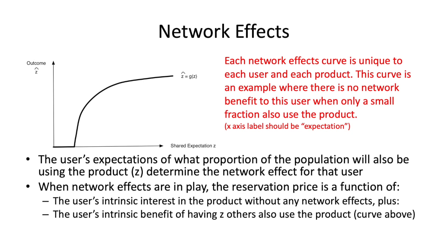Here's an important thing to emphasize that is not clear in the book: each network effects curve is unique to each user, and for each user it's unique to each product. So depending on what application, computer, or car you're using or thinking about buying, all of those have different network effects curves. If there is only a small number of people using the product — say between 0 and 10% of the population — this user gets no additional benefit from it.